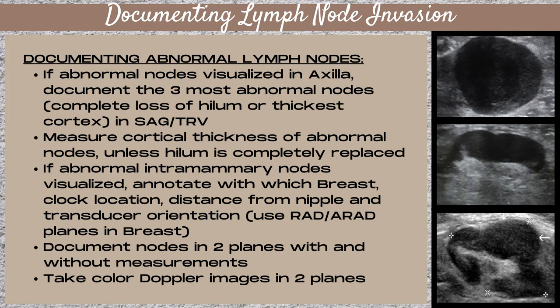You want to document them in both sagittal and transverse planes. Measure the cortical thickness of abnormal nodes unless the hilum is completely replaced and you can no longer visualize it. The cortical thickness measurement is a vertical measurement, an AP dimension. Document the axillary node in two planes — sagittal and transverse — with and without measurements.